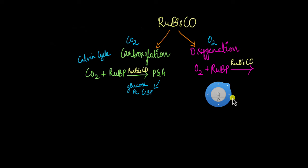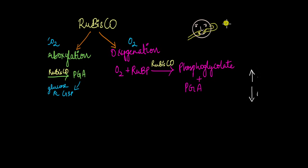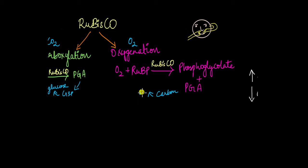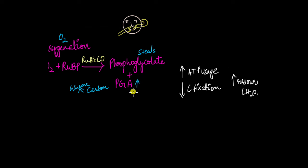But what if oxygenation occurs? When oxygenation occurs, instead of carbon dioxide and RuBP reacting, oxygen and RuBP react in the presence of Rubisco. Instead of just giving PGA, another substance known as phosphoglycolate is also produced along with PGA. Because of the production of phosphoglycolate, the number of carbon atoms available to produce glucose decreases — phosphoglycolate essentially steals the carbon atoms needed for glucose.